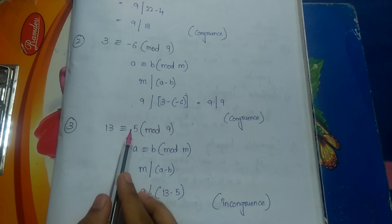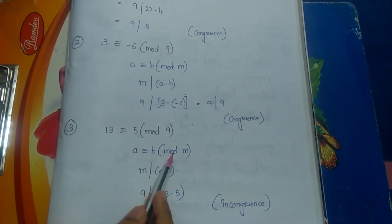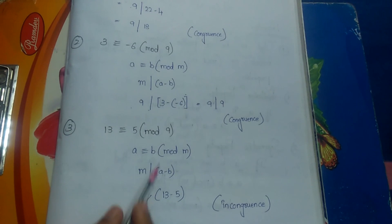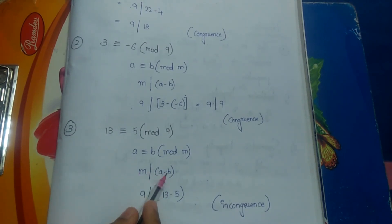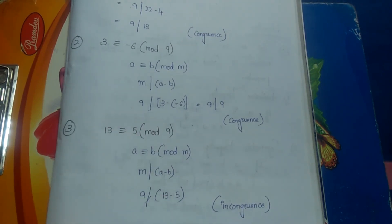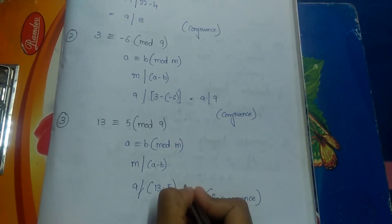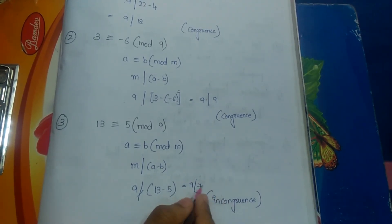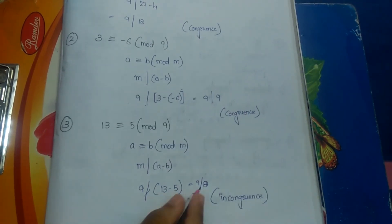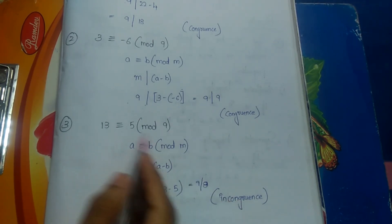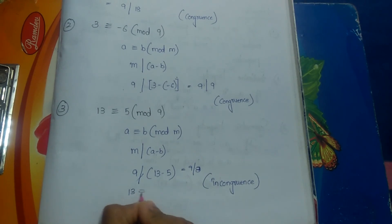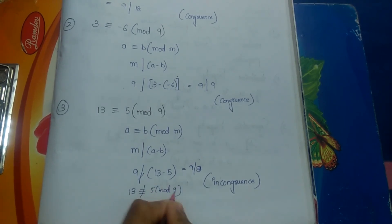Third example: is 13 congruent to 5 modulo 9? Using the condition m divides a minus b: m = 9, a = 13, b = 5. So 9 divides 13 minus 5, which is 9 divides 8. Since 9 does not divide 8, this is incongruent. Therefore 13 is not congruent to 5 modulo 9.